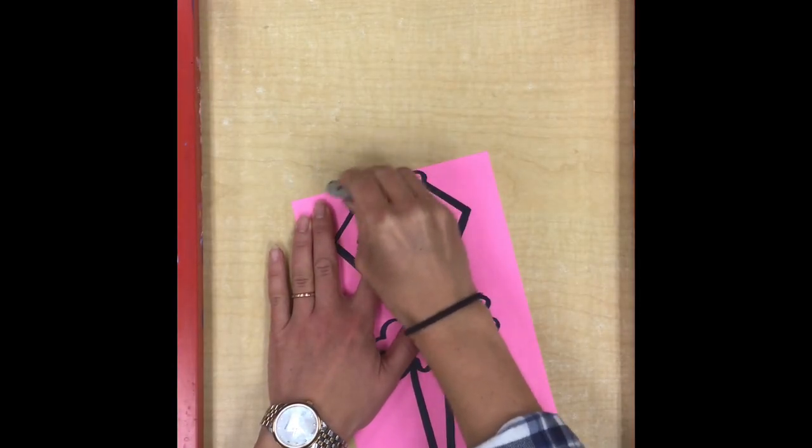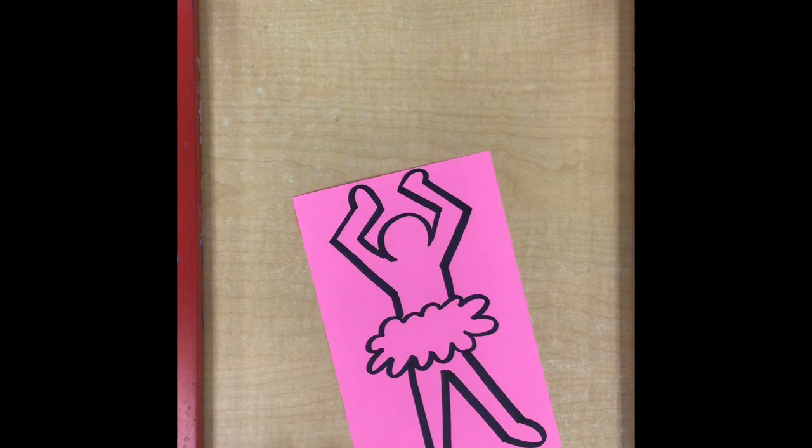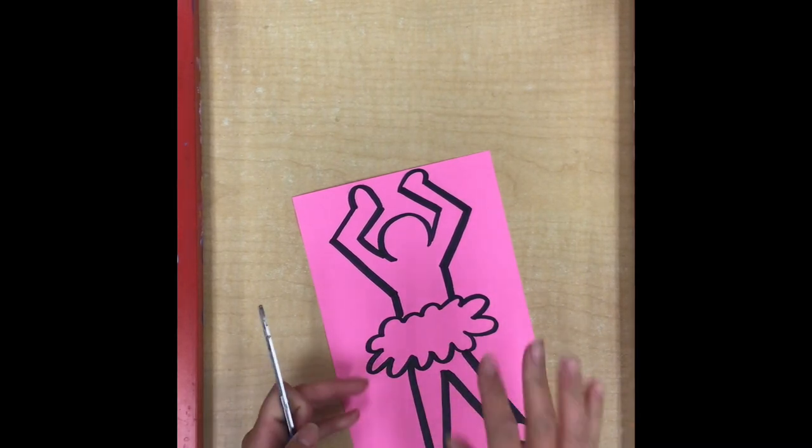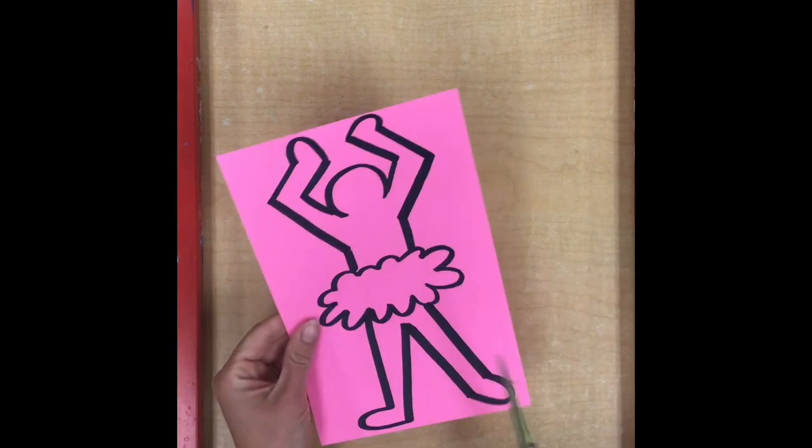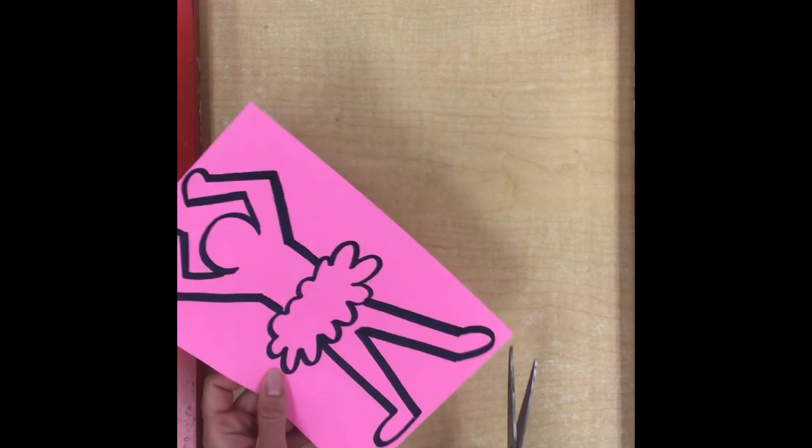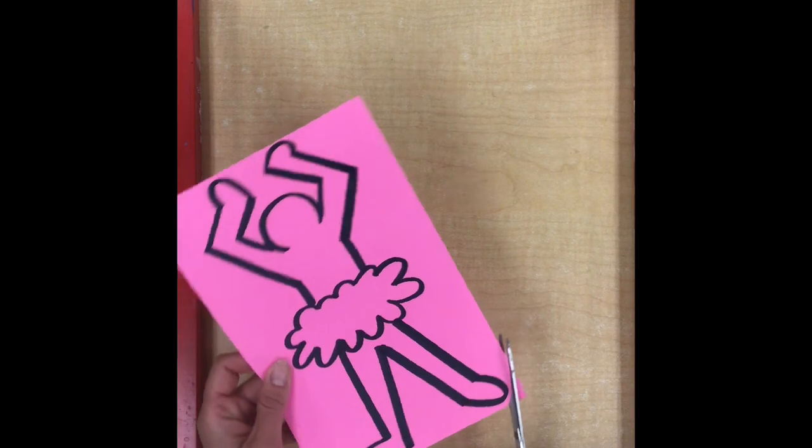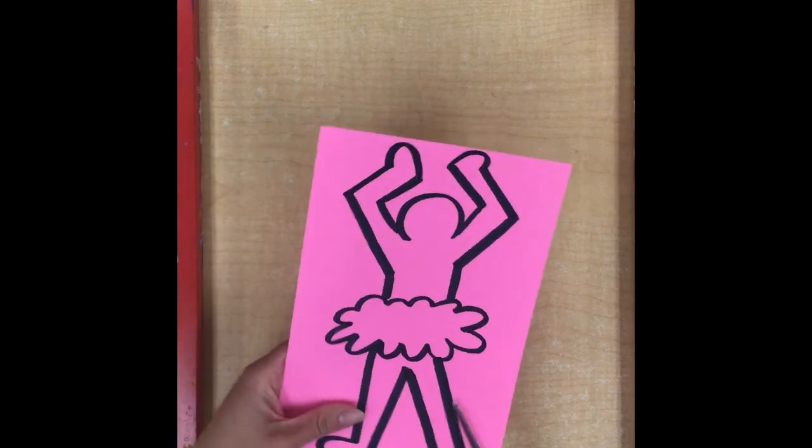Now that our figure is traced, it is ready to cut out. When you cut, we are not going to get close to the black outline. We don't want to cut any of that off at all. We're actually going to leave just a little bit of colorful paper around the edge of our figure.